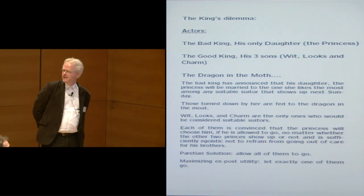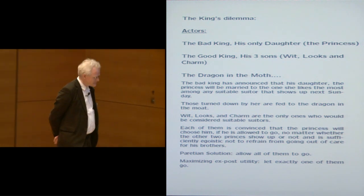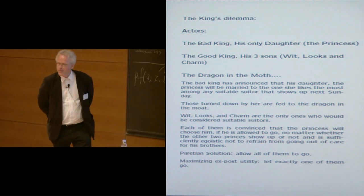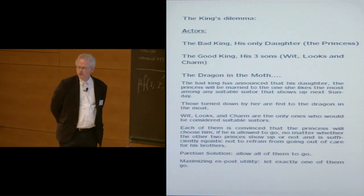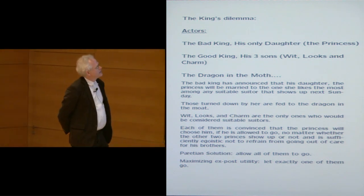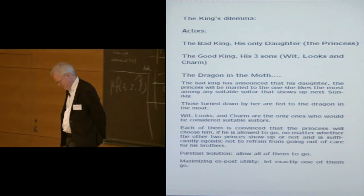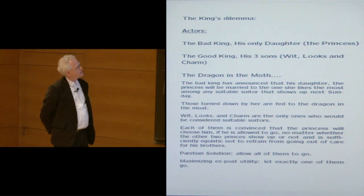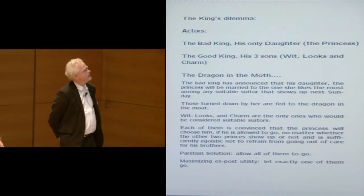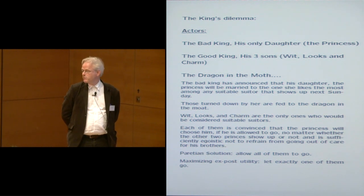So this is how they think about themselves. And the last actor in this drama is the dragon in the moat. The bad king has announced that his daughter is going to be married away to any suitable suitor next Sunday. And she would choose from anyone that shows up next Sunday. There are only those three suitable suitors. If the good king is Paretian, he should let all of them go. That is the only Pareto-optimal solution in this setup.